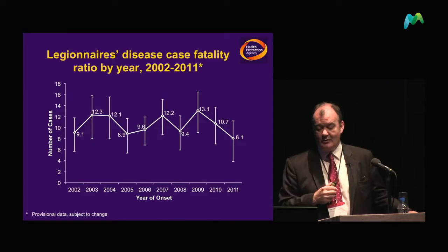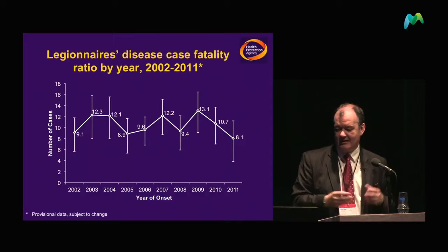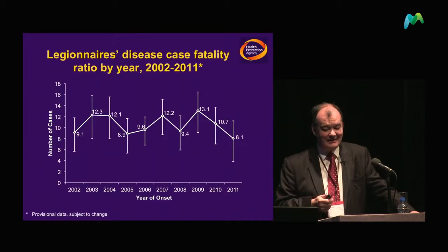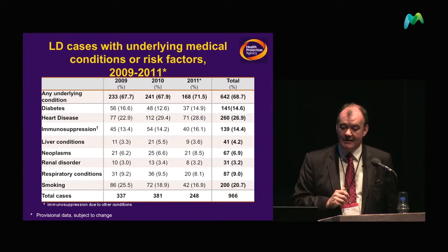Over the last 10 years, at one point we hoped we were seeing a downward trend in the case fatality ratio — then it went up. But over the last 10 years we've seen it go from 9.1%, and its most recent figure is 8.1%. You might, with the appropriate statistical test, be able to say that might be significant — but hopefully what's happened in 2009, 2010, and 2011 will continue.